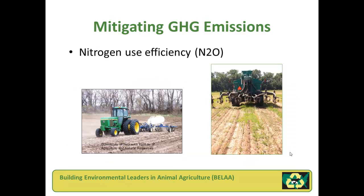Nitrogen use efficiency is an important piece of the puzzle. Nitrous oxide emissions from agricultural soil management were identified in an earlier video as one of the largest agricultural sources of greenhouse gases. In a perfect world, plants would use every ounce of nitrogen fertilizer applied to a field or pasture. In reality, it is impossible to exactly predict soil yields and other factors that go into the uptake of nitrogen by crops.